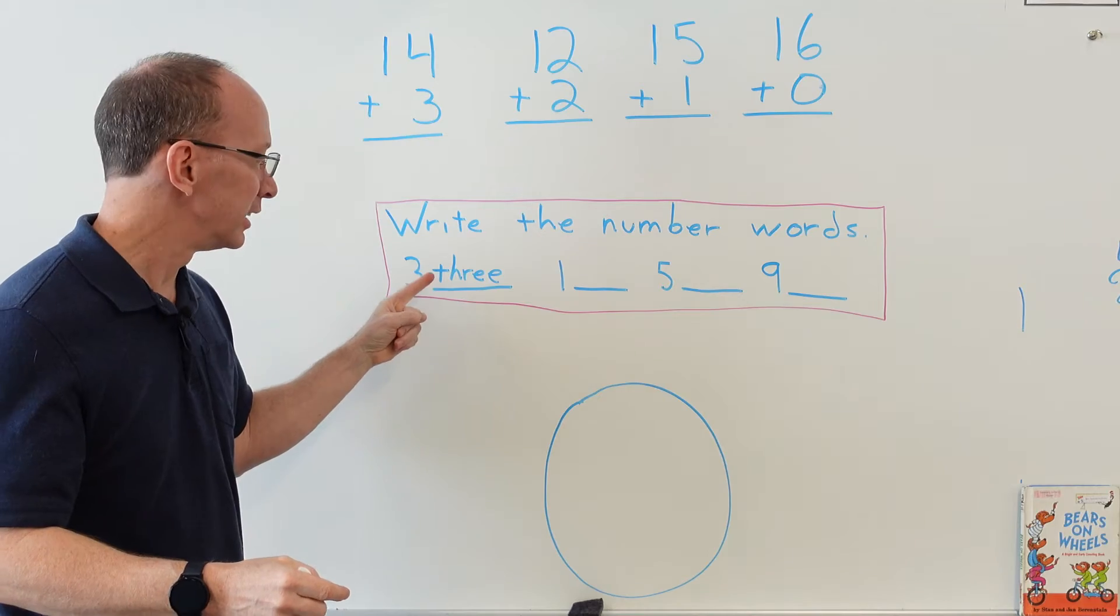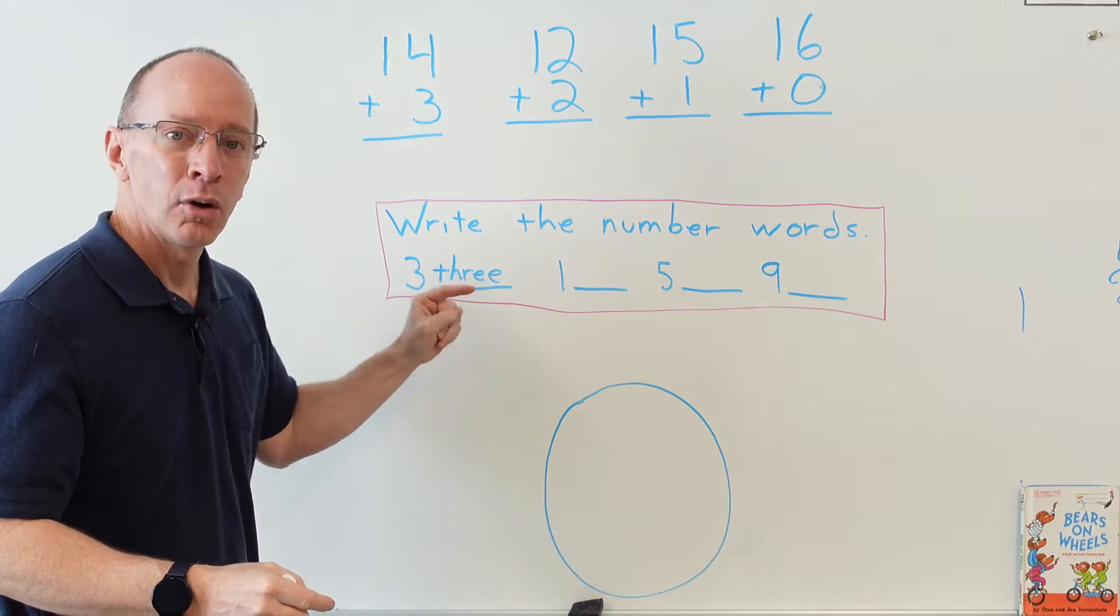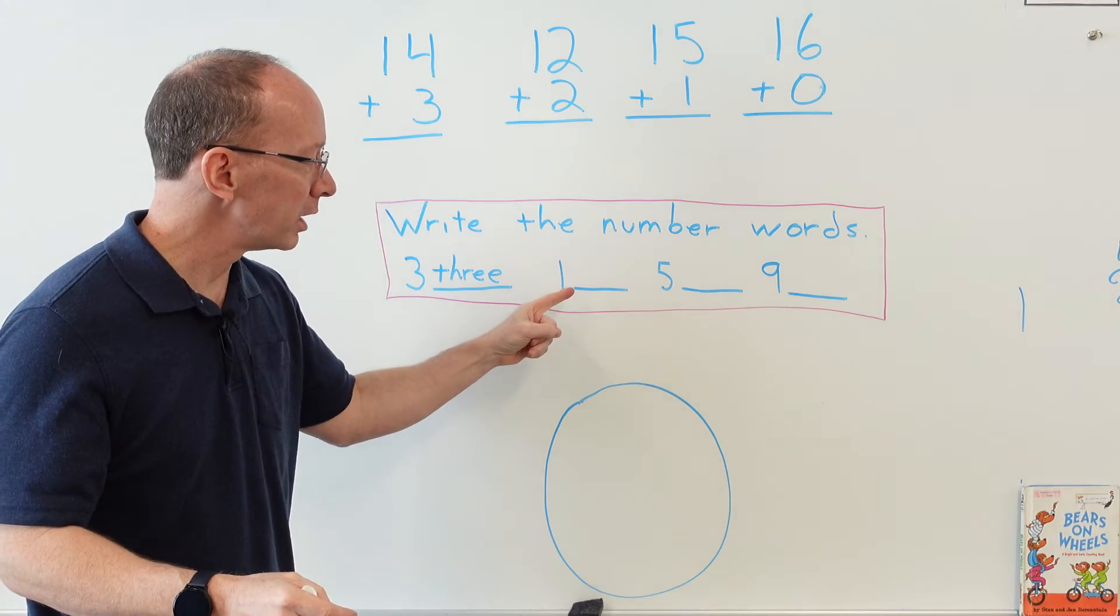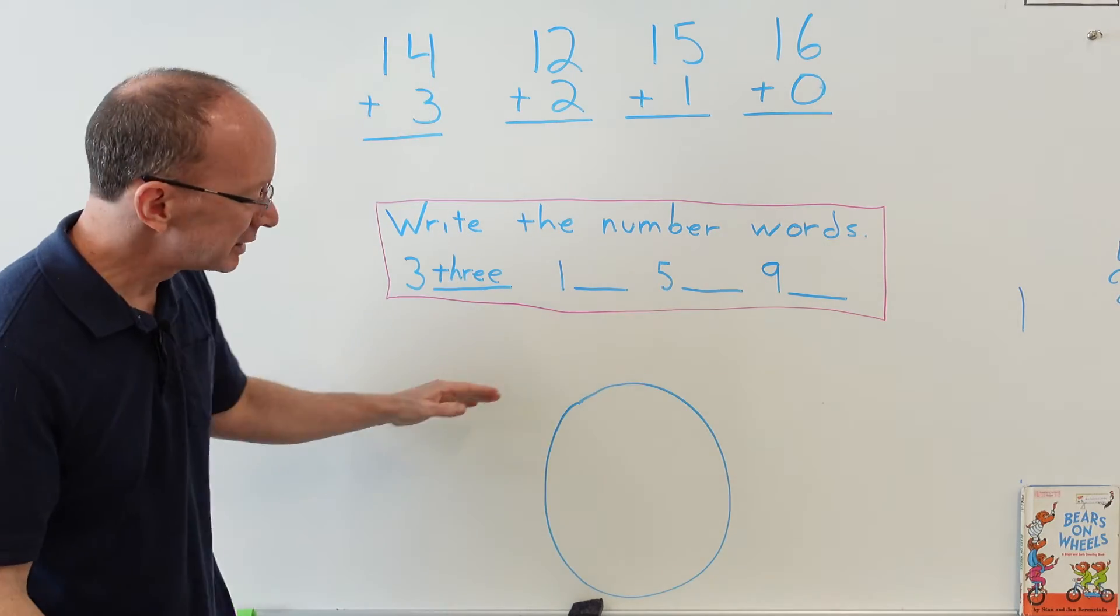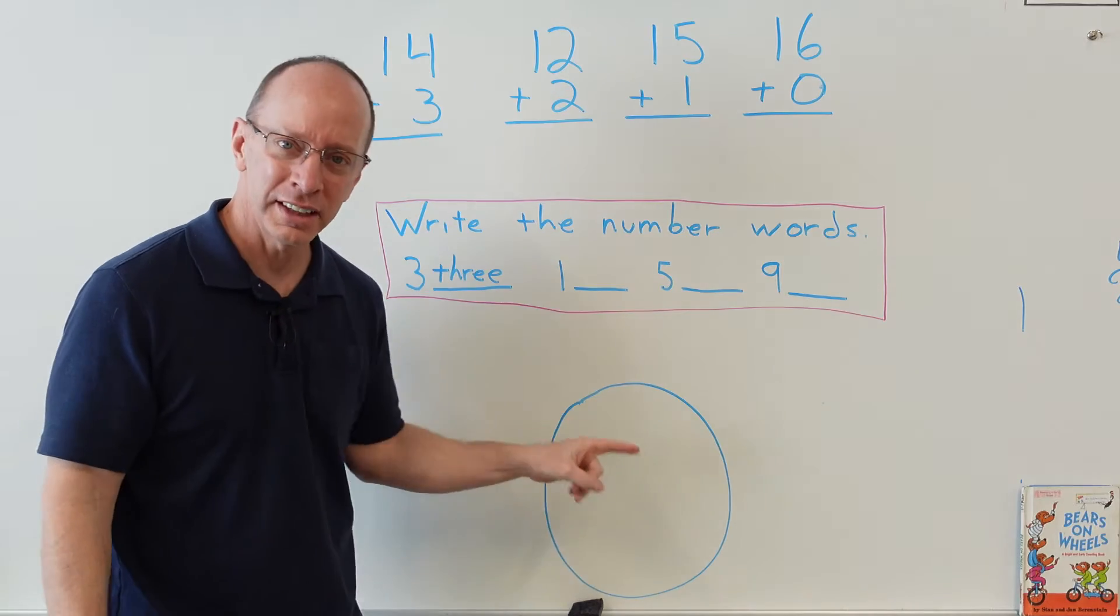Write the number words. I did an example right here - here it is, three, and I spelled out three: T-H-R-E-E. What I want you to do is spell the word one, five, and nine.